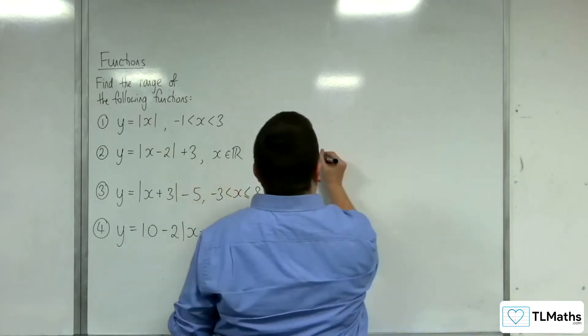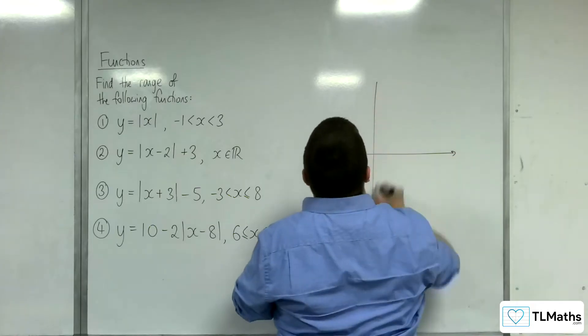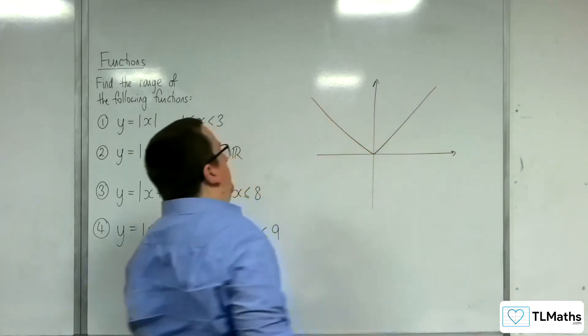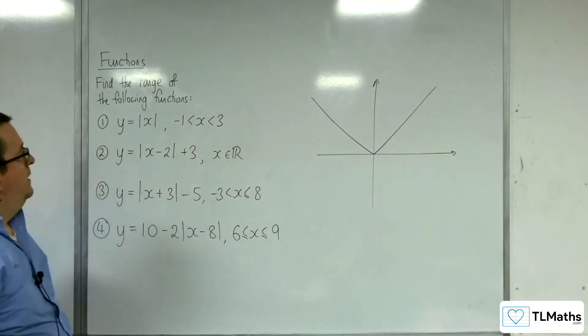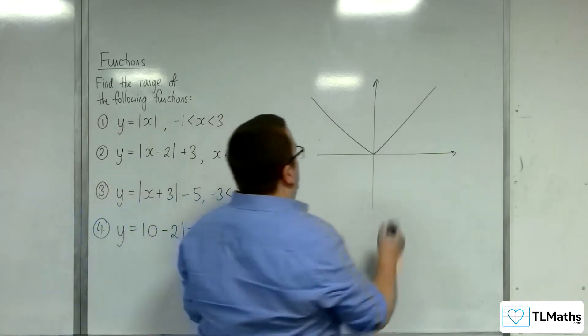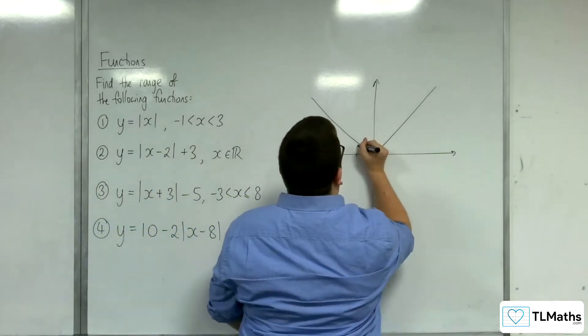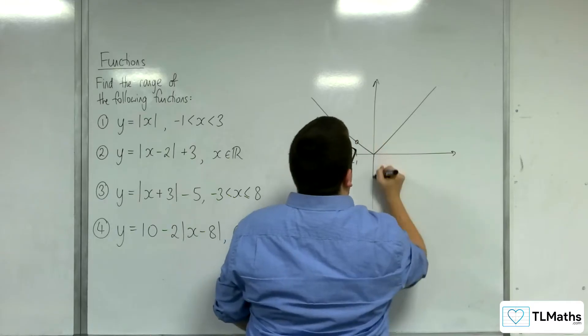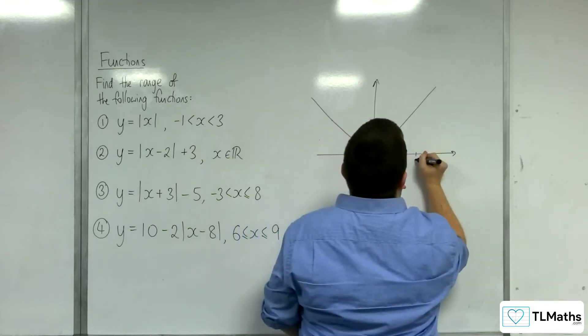So let's have a look at number one. Nice and straightforward, y equals modulus x. So that's what y equals mod x looks like. Now if you have said that it's only going between minus 1 and 3, so minus 1, so from that point there, to 3, which is somewhere over here.